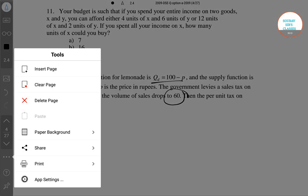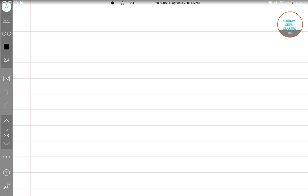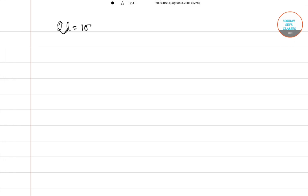To solve this question, first we have to find equilibrium. So QD equals 100 minus P and QS equals 10 plus 2P. The equilibrium is 100 minus P equals 10 plus 2P, so 3P equals 90, P equals 30. This is the equilibrium price without tax.